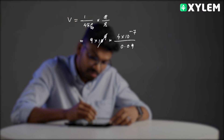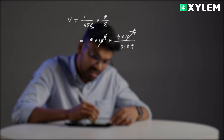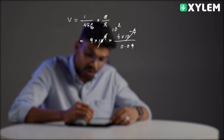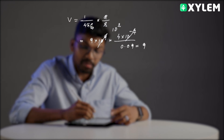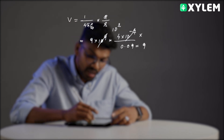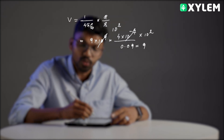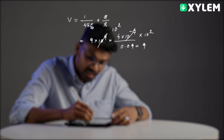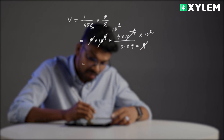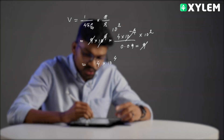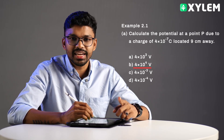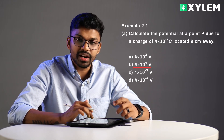Calculating the powers: 10⁹ × 10⁻⁷ gives 10². That gives us 100. Then 9 × 9 = 81, and with 4 we get 4×10⁴. So option B is the right answer: 4×10⁴ volts.